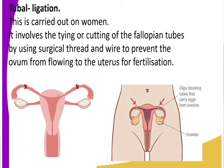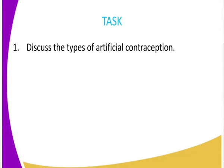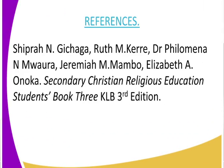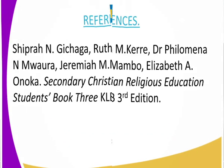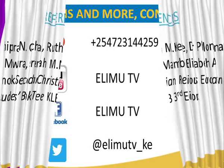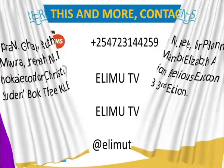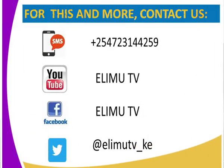So class, we have looked at a number of methods of family planning today, though just a few. In our next session we will look at more methods of family planning. Can you state the types of artificial contraception? For reference, you can clearly see them on our screen. This has been Elimi TV, your favorite learning channel.